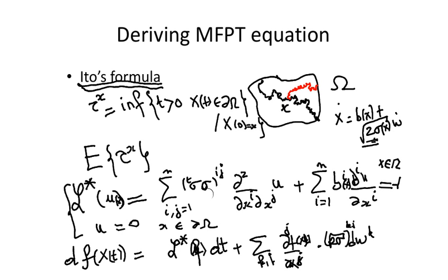Now it's clear. We have this equation with u equal 0 for at any point x on the boundary of the domain. Inside the domain, we choose u such that L star of u equals minus 1 for any point x inside the domain. Then let's integrate the Ito formula from a point x to a point on the boundary, let's call it y.